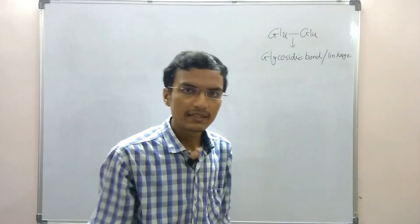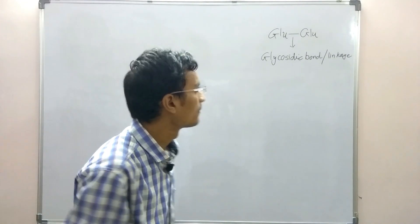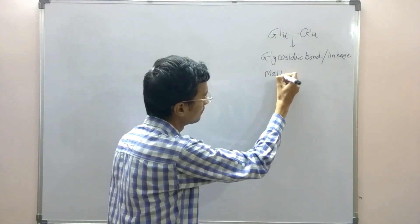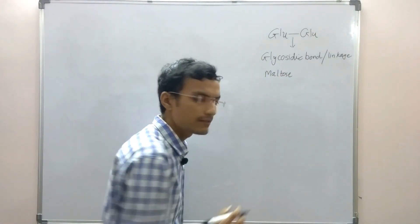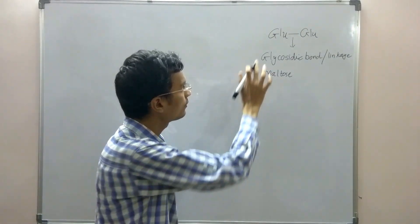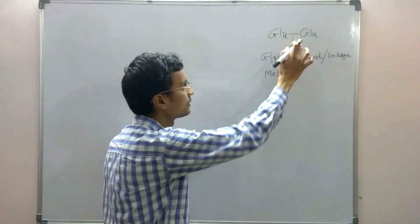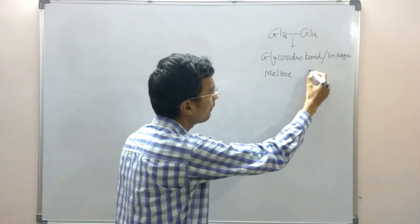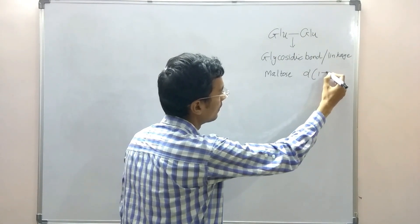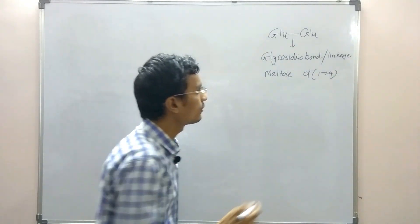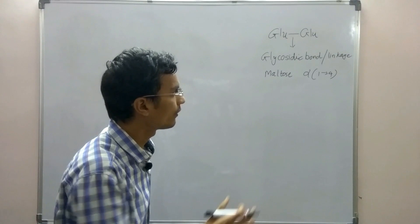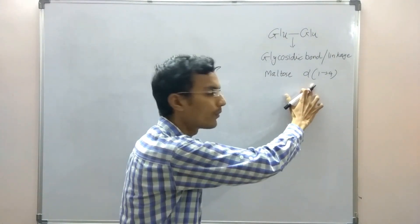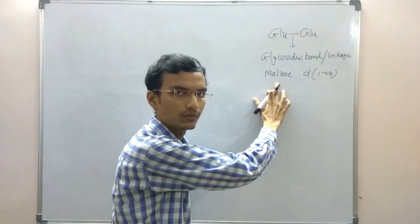The examples of disaccharides include maltose, which is made up of two molecules of glucose joined to each other with an alpha-1-4 glycosidic bond.